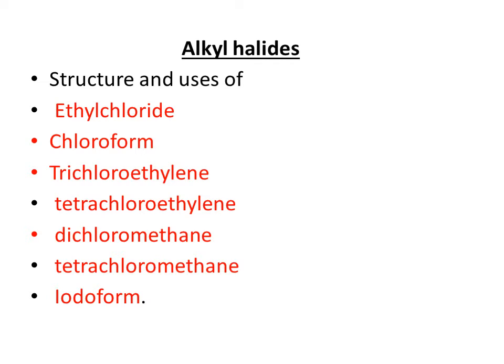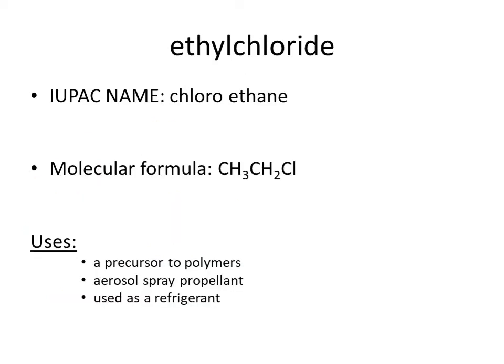Let us discuss individual compounds now. The first compound is ethyl chloride — an alkyl halide where the alkyl group is the ethyl group. The formula of ethane is CH3CH3 or C2H6. Ethyl group means minus one hydrogen, so when chlorine is attached to the ethane group, it is called chloroethane or ethyl chloride.